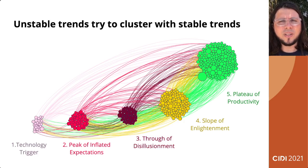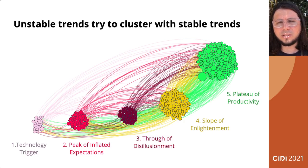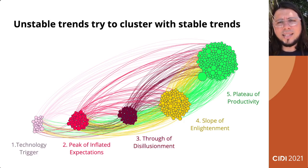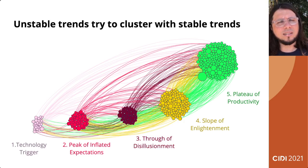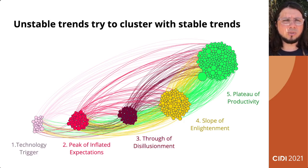As you can see in this analytical graph, stable trends join together and mostly link to almost-stable trends — the plateau of productivity trends link the slope of enlightenment trends. And the technology trigger trends, which should bring new changes and be open for differentiation, just go ahead and link the plateau of productivity trends, forming a conservative pattern of linking. A new difference must connect to an existing difference, and therefore the difference cannot be so great.